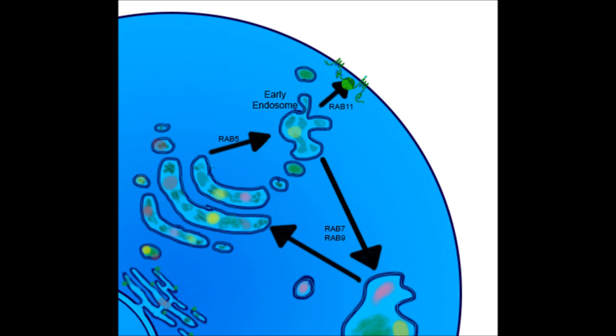However, trafficking from the early endosomes to late endosomes and then to the trans-Golgi network is controlled by RAB7 and RAB9. Therefore, impairments in any of these proteins may result in cystic fibrosis.